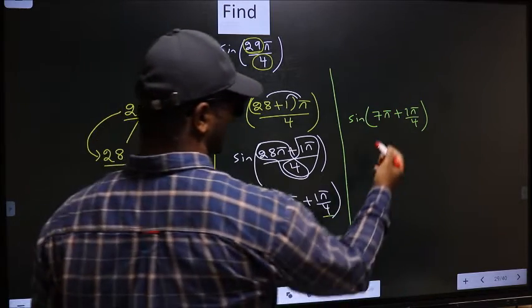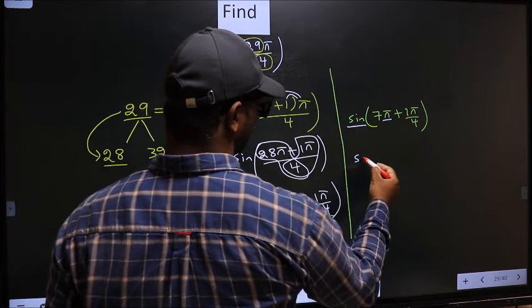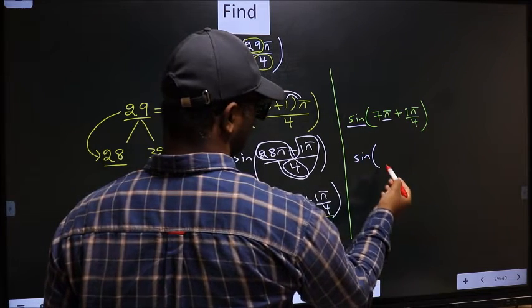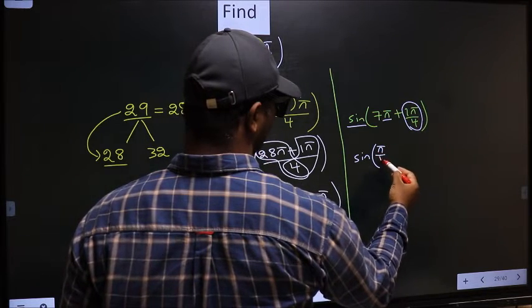Next, here we have π, so sine is not going to change. It will remain sine, and inside we get this angle: π/4.